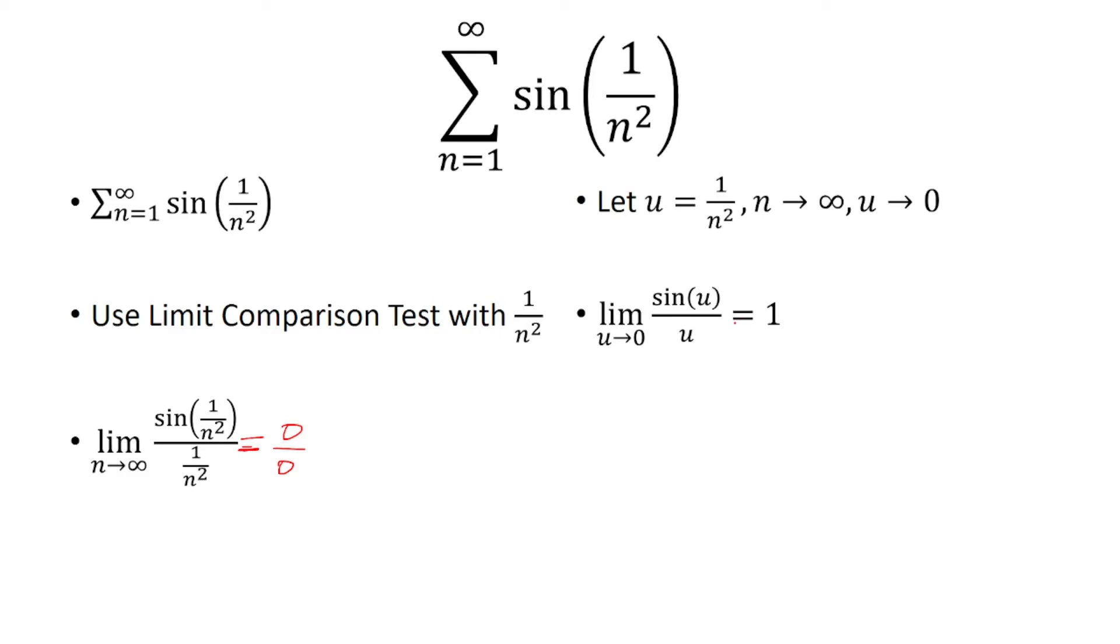So because the limit is positive and finite, 1 over n squared converges by the p-test. So will sine of 1 over n squared by the limit comparison test.